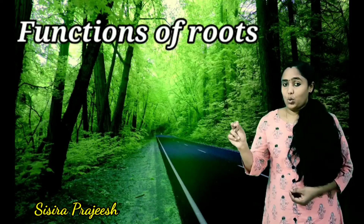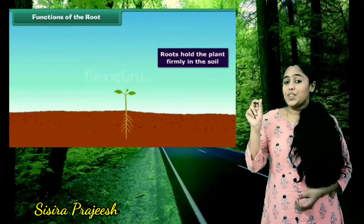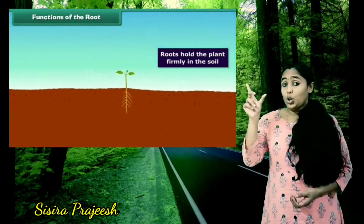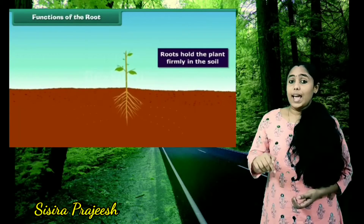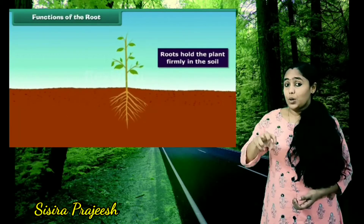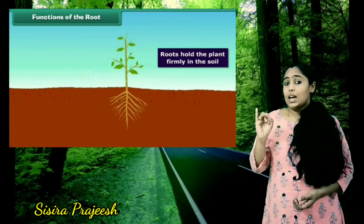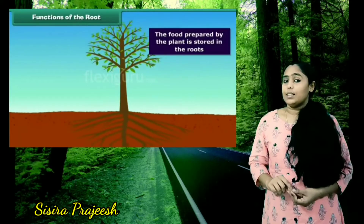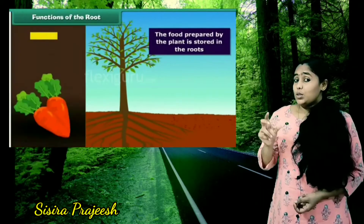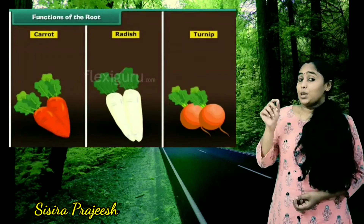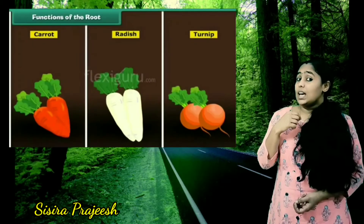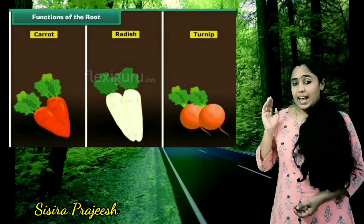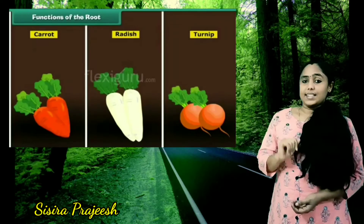Functions of roots. Root is the one which fixes the plant in the soil. Root goes deep into the soil and absorbs the minerals, nutrients, and water from the soil. Roots can also store food, and such types of roots can be taken as food. Examples of such types of roots are radish, carrot, etc.